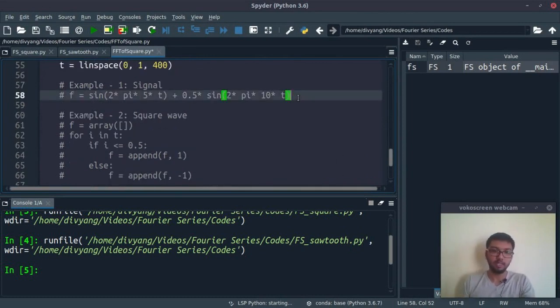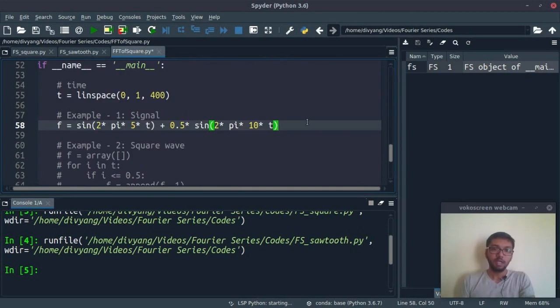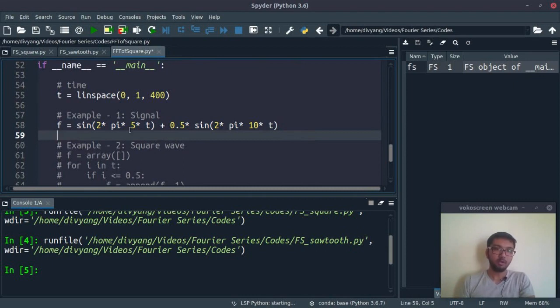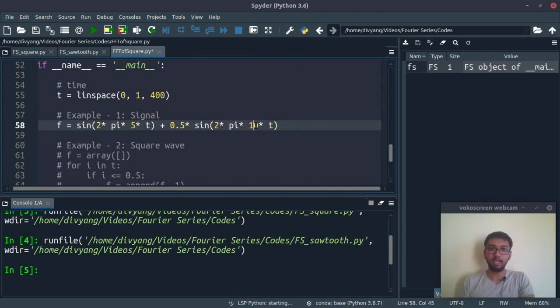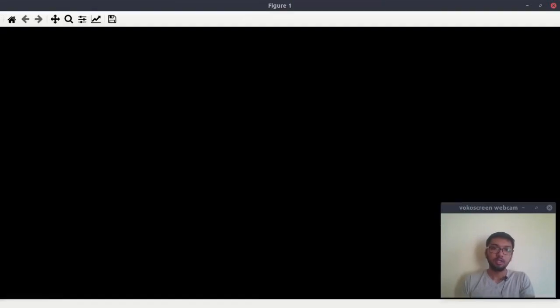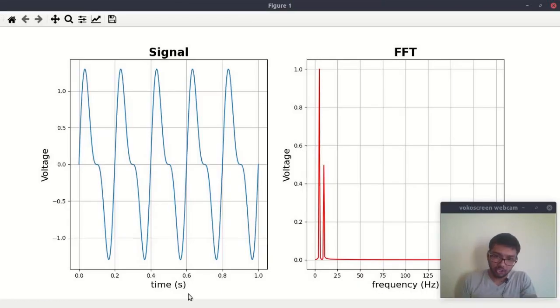I will show you how people use this FFT for applications like signal processing. Here you have the signal like this: sine 2 pi into 5t plus 0.5, and 2 pi into 10. This means there are two frequencies present in our signal: 5 hertz and 10 hertz.